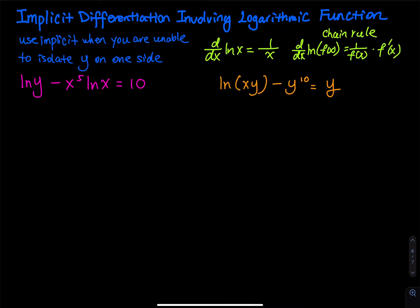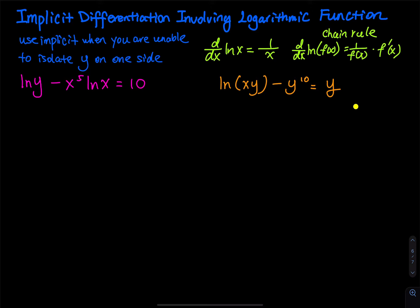Implicit differentiation involving logarithmic functions. So when do you do implicit? You do implicit differentiation when you are unable to isolate y on one side. So let's take a look at the second function. We have x times y, we have y to the 10, that equals y. It is hard to have y on one side and a bunch of x on the other side. So the second equation is clearly implicit.